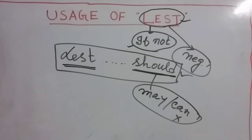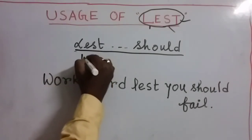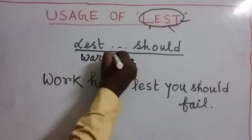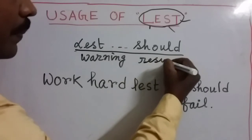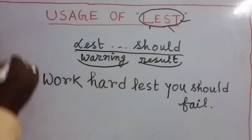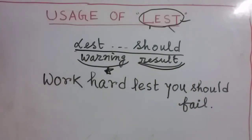Now we have to think about when to use this structure. The conjunction 'lest [clause] should' is used to express a warning and also to suggest the consequence of not paying attention to that warning. At first there will be the warning, and if you do not follow the warning, the result will also be given. In this situation only we can use 'lest should.'